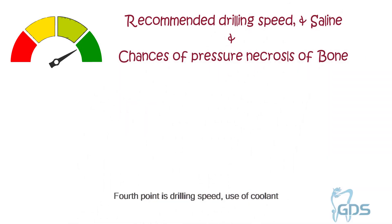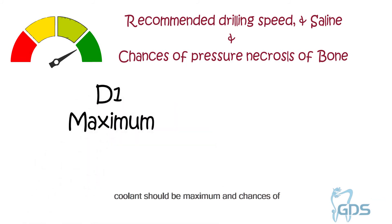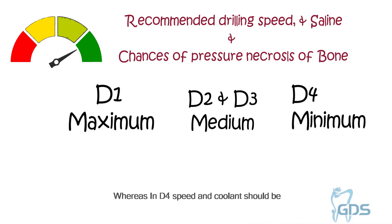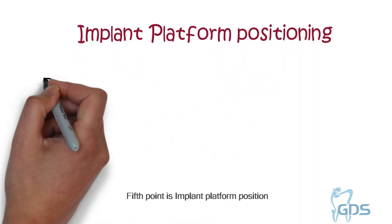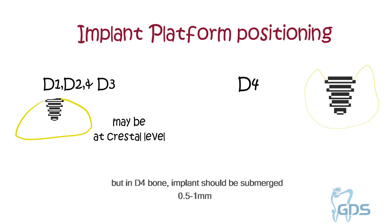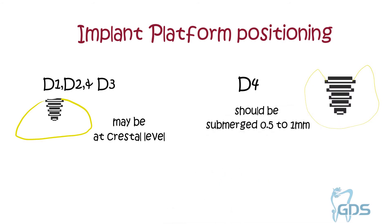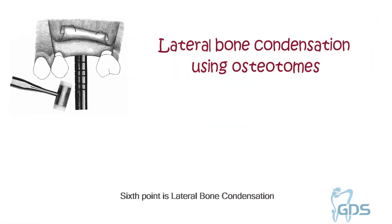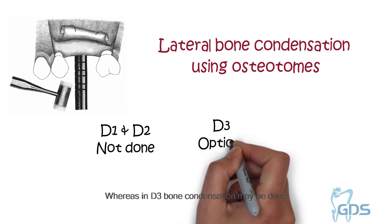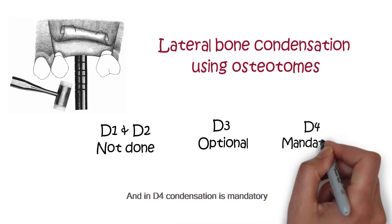Regarding drilling speed, use of coolant, and chances of pressure necrosis: D1 bone is hard, so drilling speed and coolant should be maximum, and chances of pressure necrosis are also maximum. In D2 and D3 bone, speed and coolant should be medium, and chances of necrosis are less. In D4, speed and coolant should be minimum and chances of necrosis are negligible. For implant platform position, D1, D2, and D3 may be placed at crestal level, but in D4 bone the implant should be submerged 0.5 to 1 mm below the bone crest. Regarding lateral bone condensation, in D1 and D2 bone it is not required, in D3 it may be done, and in D4 condensation is mandatory.